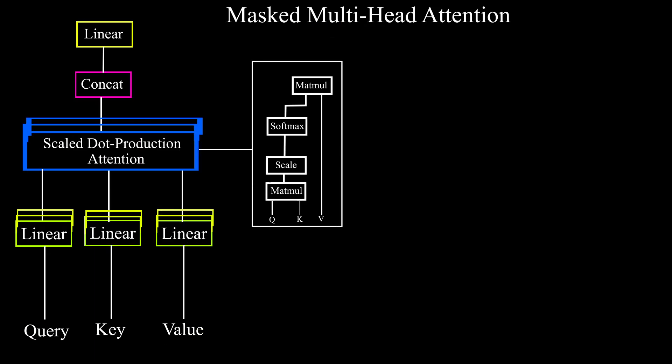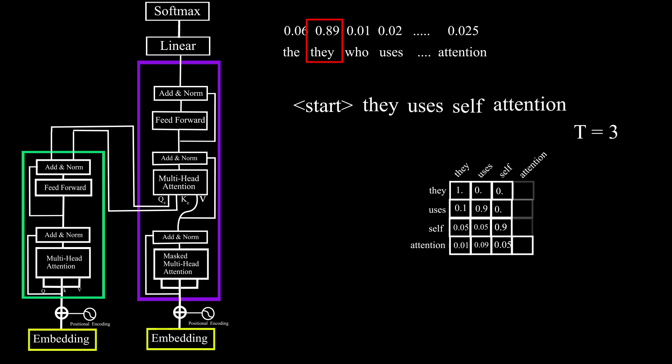So for doing this the researchers modified this attention head a little bit and added a new layer for masking. And called this layer as a masked attention head. Now in the same way the decoder will keep generating the output until it generates a special token which will represent the end of this process. And that's how the self attention works like a soul of a transformer.